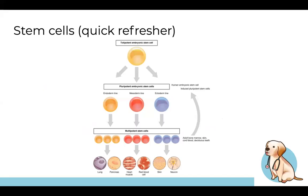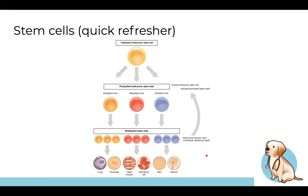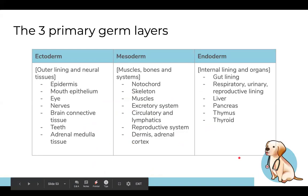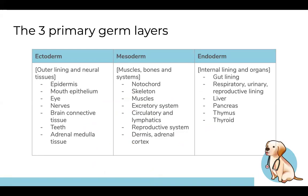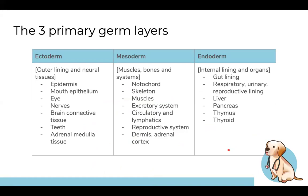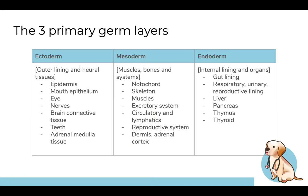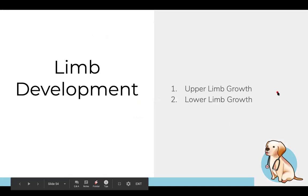Totipotent cells can become anything; pluripotent cells are more specialized. Eventually they develop into specific tissue types. A summary slide shows what each germ layer (ectoderm, mesoderm, endoderm) becomes in the body. The key ones to know are in the bracketed labels — particularly neural tissues from ectoderm. Faculty didn't teach this and it was ultimately removed from the exam, so if it's not taught, you should be fine.